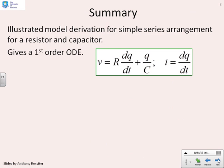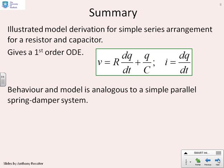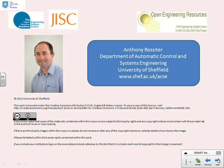So a summary. We've illustrated that the model derivation for a simple series arrangement of a resistor and a capacitor gives you this nice first-order ODE. Voltage equals resistance times dQ dt, rate of change of charge with time, plus Q over C, where Q is the charge stored in the capacitor. The behaviour in the model is analogous to a simple parallel spring damper system. And we've done this before. Take care.